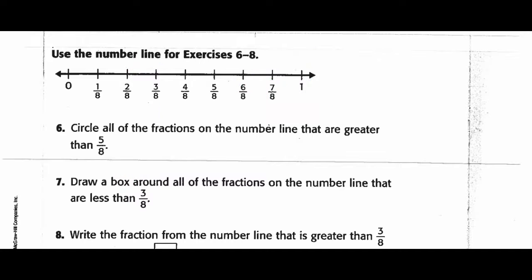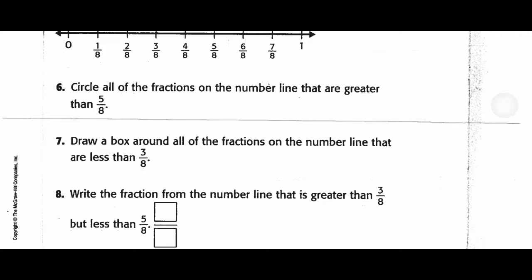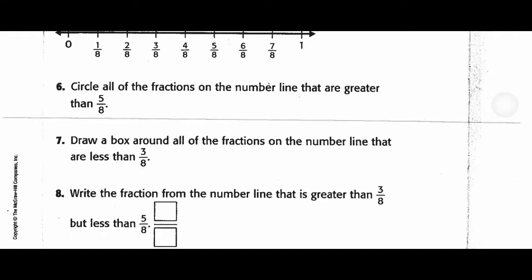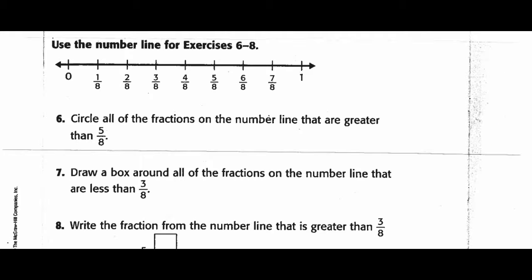And then the last one. It says, write the fraction on the number line that is greater than three-eighths, but less than five-eighths. So, here's three-eighths. It has to be greater than this. So, over here. It has to be less than this. Oh, but the one that's right in the middle. Do that one.